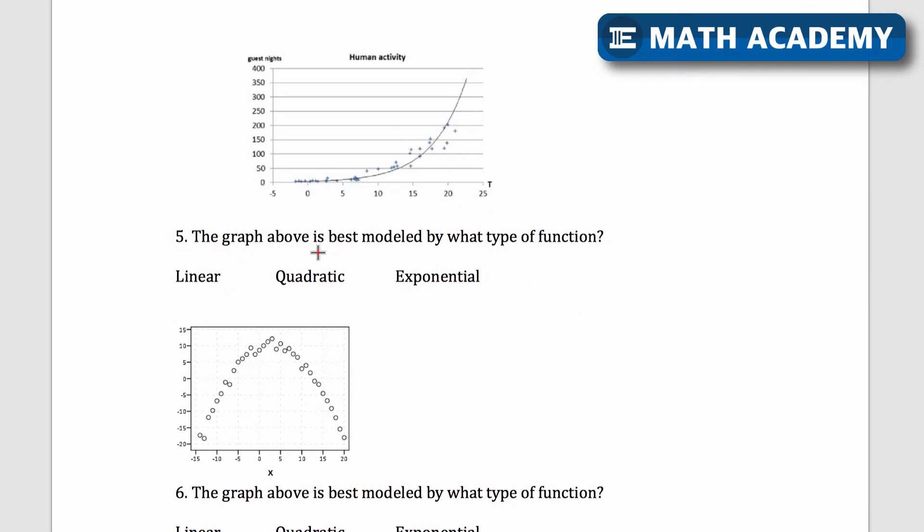Okay number five. The graph above is best modeled by what type of function? So you want to know what a linear function looks like, that'll just be a line. It might have a positive slope, it might have a negative slope. That's definitely not a line. Quadratics will look like this kind of U shape. It'll go that way or maybe it'll go that way. It doesn't look like that because it's flat on one side and it goes up on the other side.